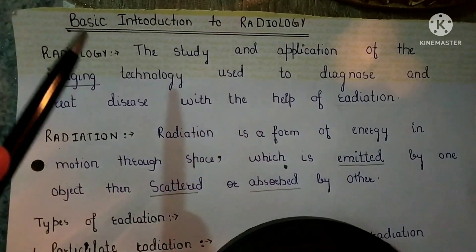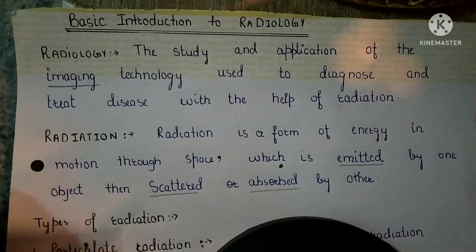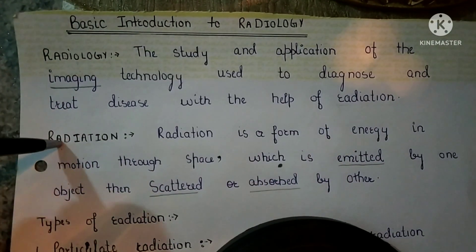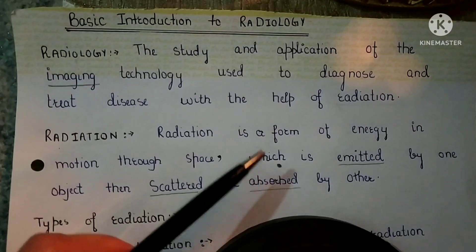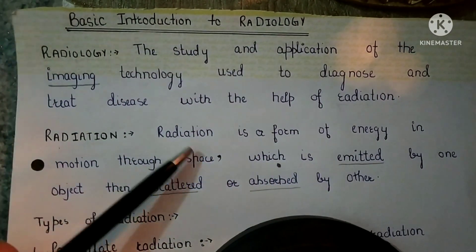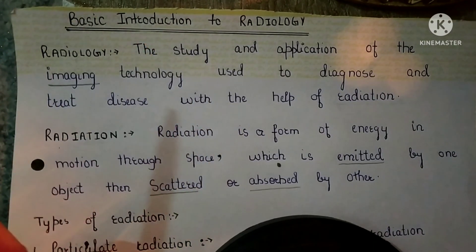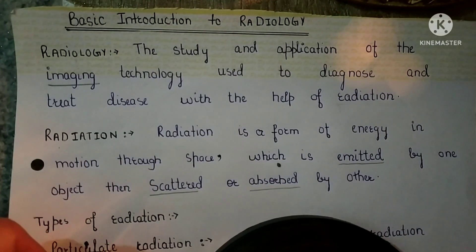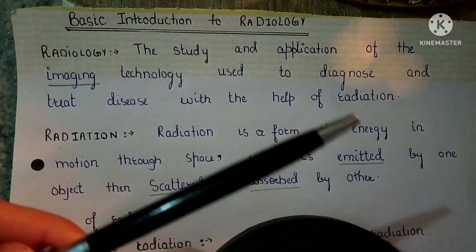Now let's move towards radiation, which is the second important term in radiology. In radiology, two important things are imaging technology and radiation. The basic physics — that is, radiation — should be known first. Radiation is nothing but a form of energy, like light, which is also a form of energy. Same is the case with radiation: it's a form of energy which is in motion, and it gets discharged from an object — it comes out from where it originates or generates. From there it gets discharged and either spreads out, or gets scattered, or gets absorbed by another object in the space.